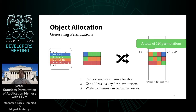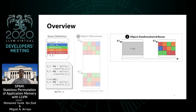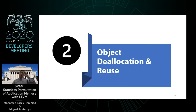Our current configuration parameters allow us to achieve up to 16 factorial permutations per allocation, and we can even extend this to 64 factorial if needed. Now, what happens when the object is deallocated? Let's talk about object deallocation and reuse — a potential source of temporal memory safety vulnerabilities.